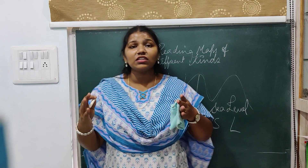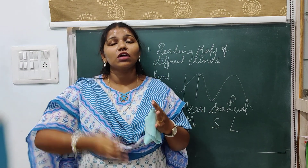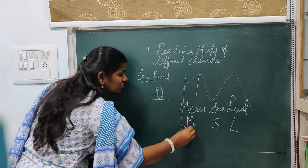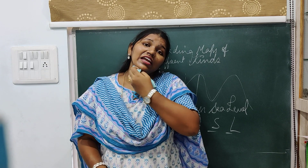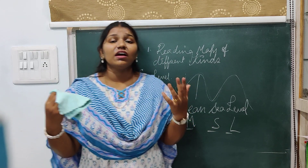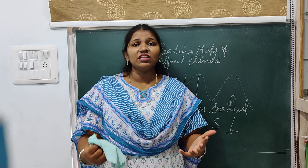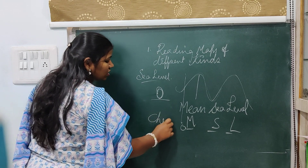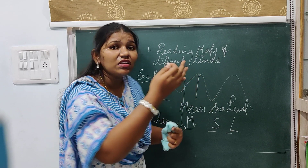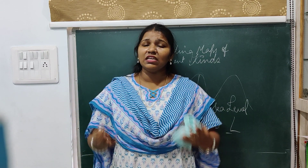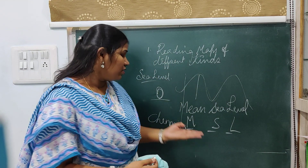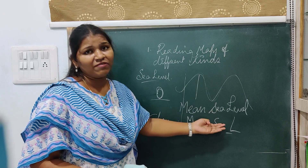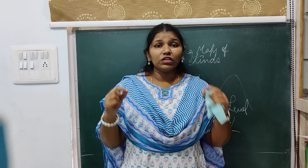So from the Mean Sea Level, we start calculating all heights. For example, if we want to calculate the height of a building which is 2000 meters, we start from zero — that is, the Mean Sea Level — and from there we take the height. In our country, the Mean Sea Level starts from Chennai, which is at a very low, southern part of India. So all heights — buildings, mountains, everything — are calculated from Chennai.